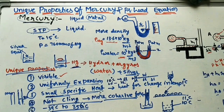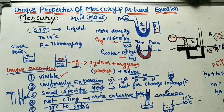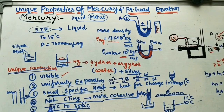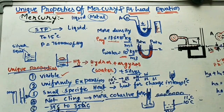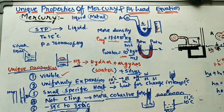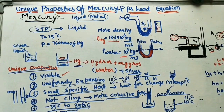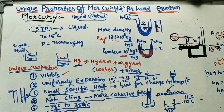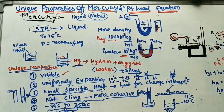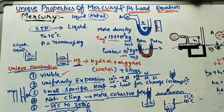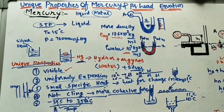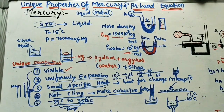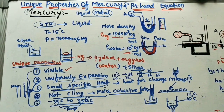Mercury can be used over a wide temperature range: from -39°C, its freezing point, up to 356°C, its boiling point. Most experiments are conducted within this range. This wide range is a major advantage, allowing manometers to function even at lower temperatures like -1, -2, or -3°C. These are the unique properties of mercury that make it ideal for pressure measurement in labs.